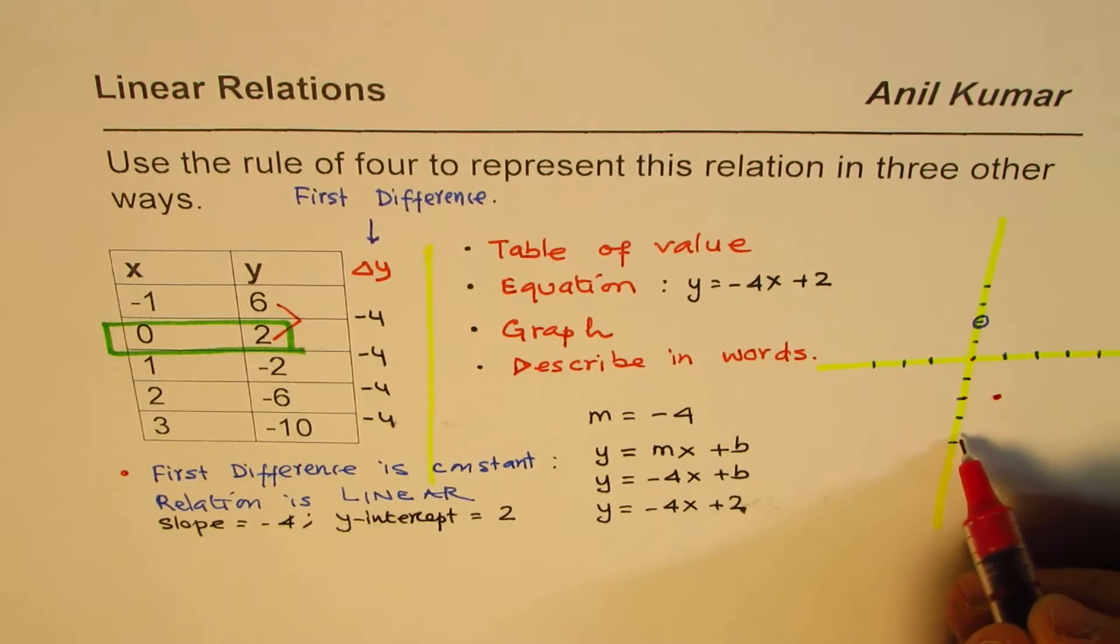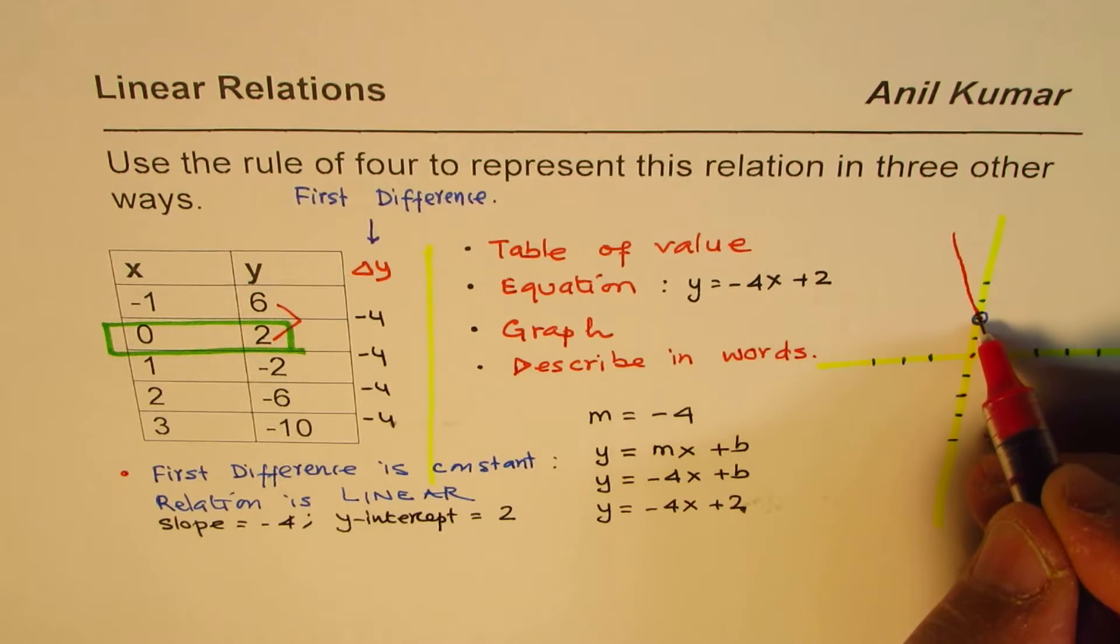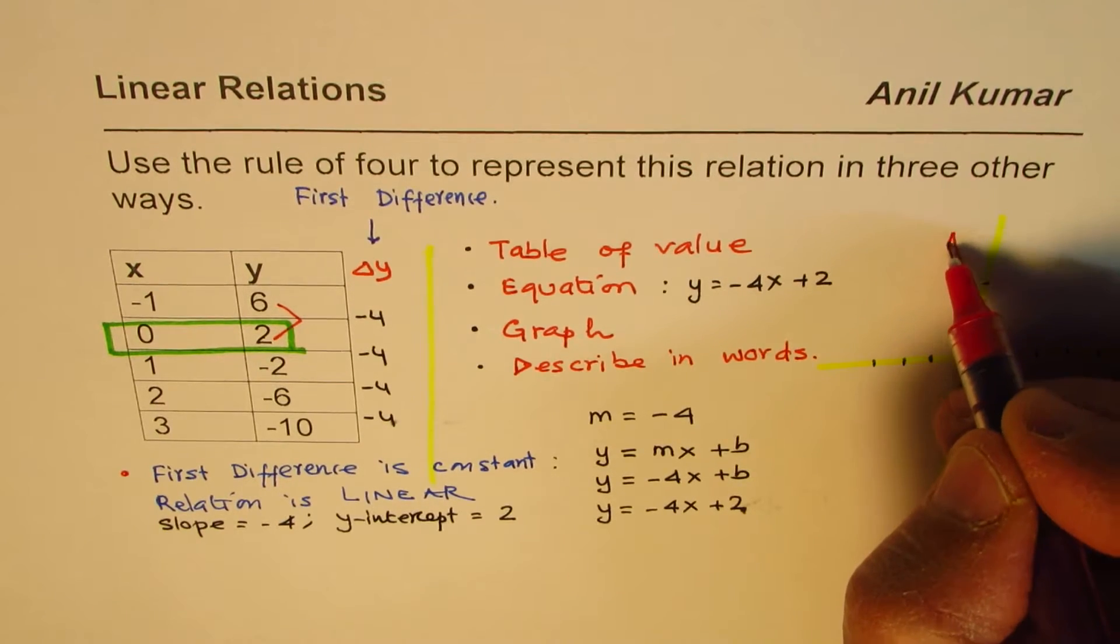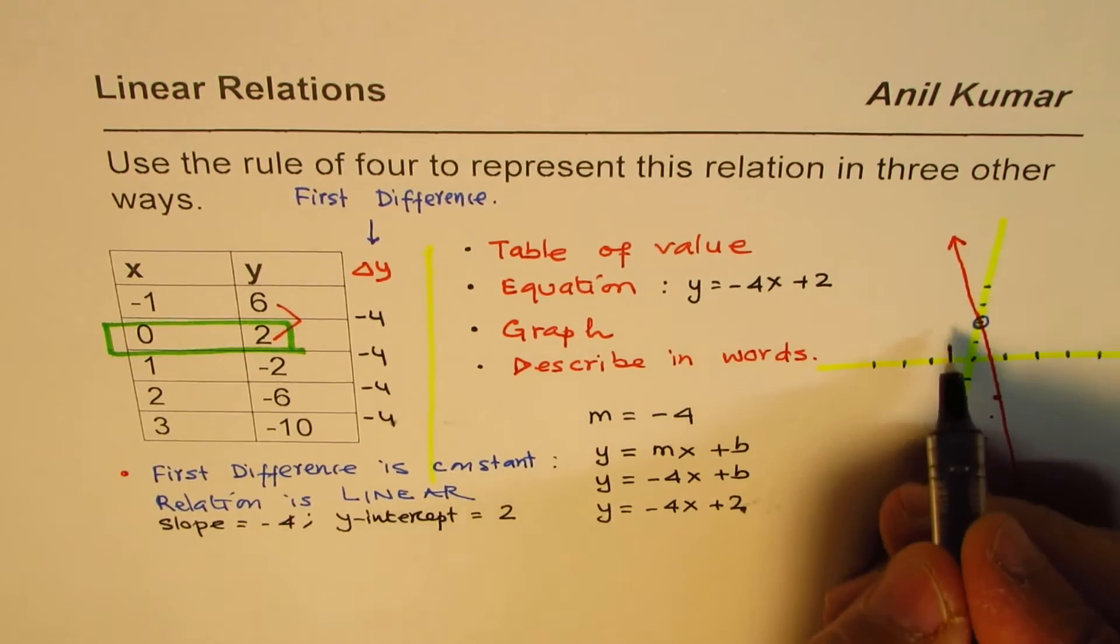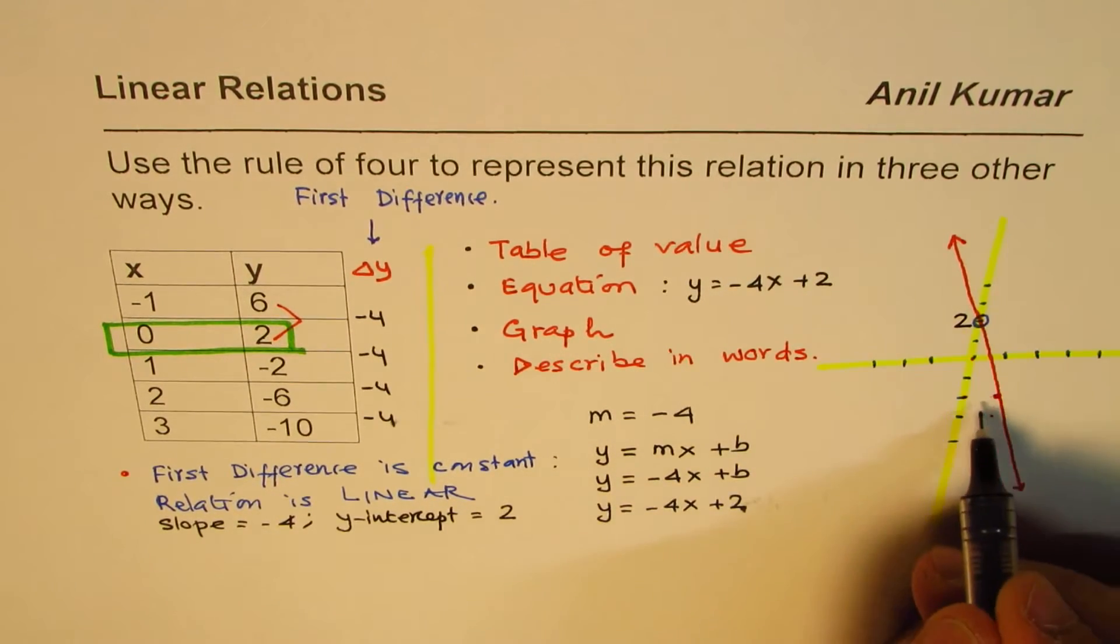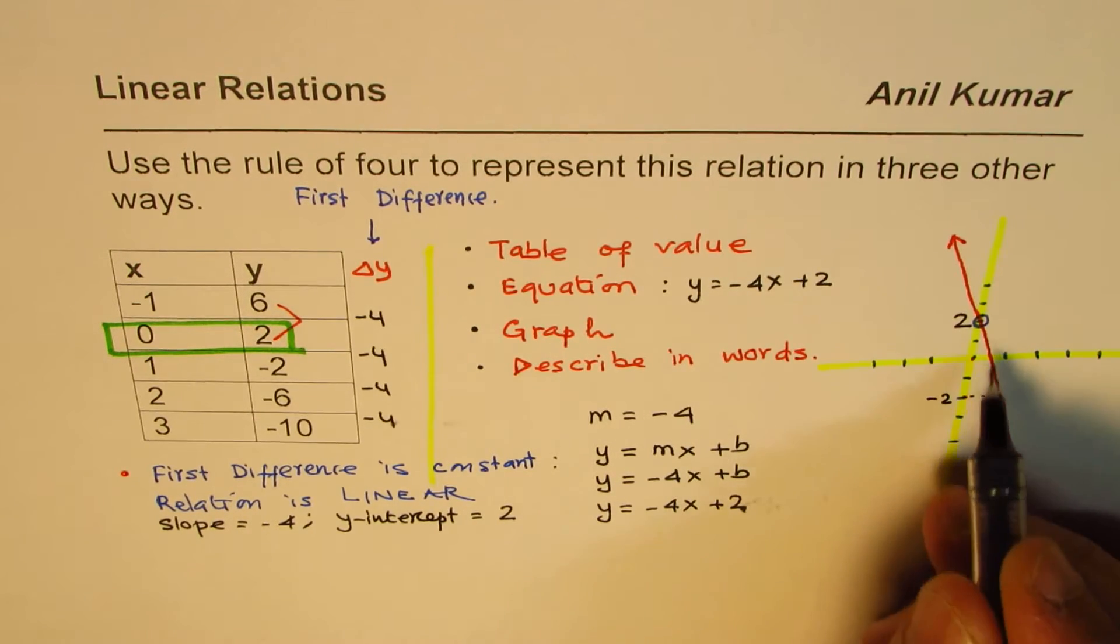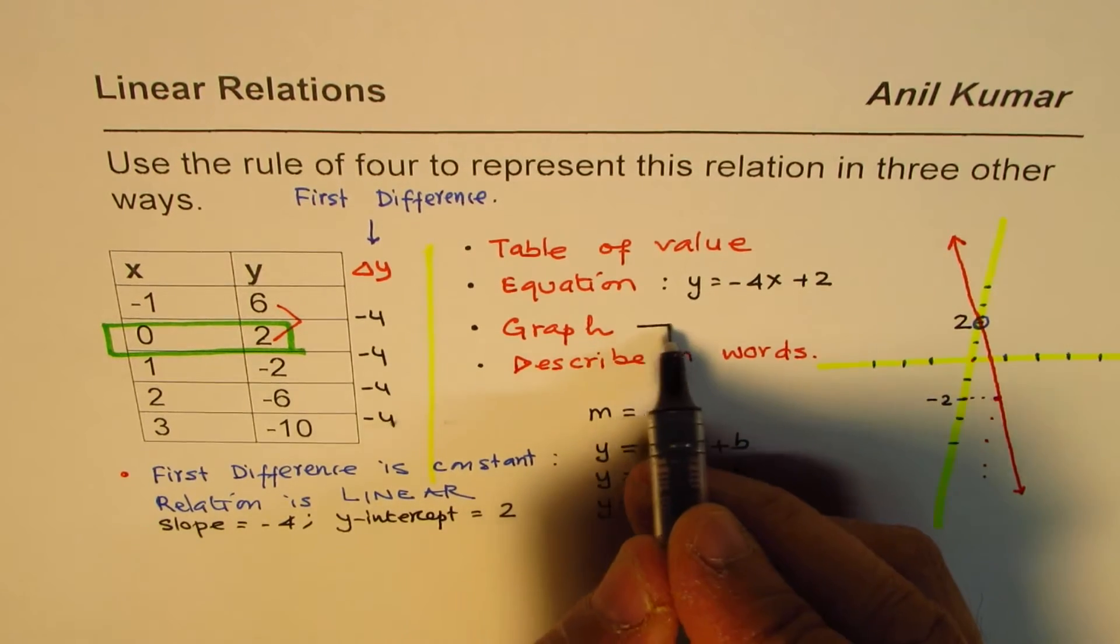And then again, 4 units down. So, 1, 2, 3, 4, and another point on the side. So, joining them, we get a line. Do you see this line? This line will represent this equation, minus 4x plus 2. So, 2 is the y-intercept, and the slope, which you can say rise over run, is minus 4. So, that's the second way, the graph.